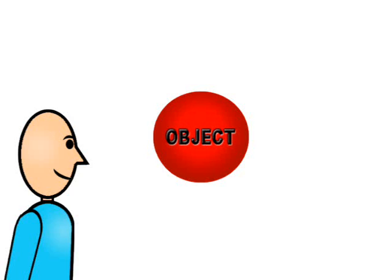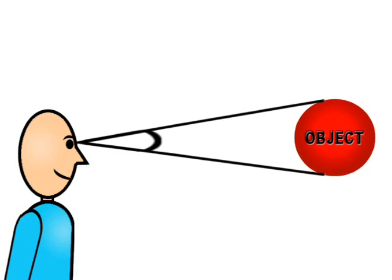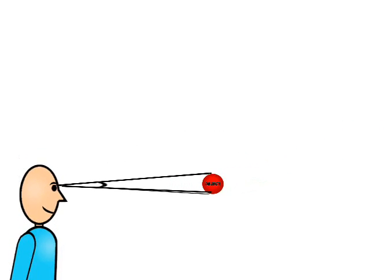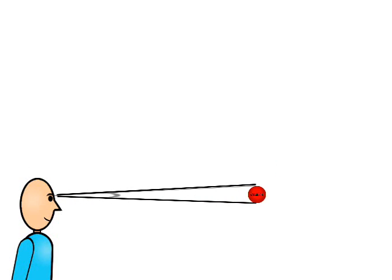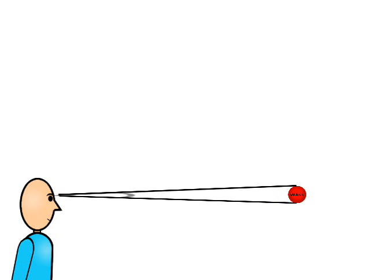Let's consider the example of a person watching a spherical object — a ball, for instance. You see that the eye of the person forms an angle with the width of the object. As the width of the object decreases, or when it is moved away from the person, this angle will decrease. If we move the object away far enough, we will reach the point at which the person won't be able to see the object any longer. The angle at which the person is just able to make out the object is the angular resolution of the person's eyes.